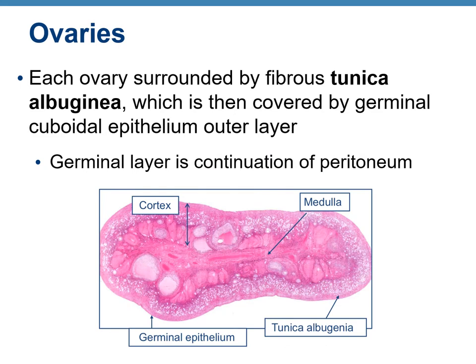Each ovary is surrounded by a fibrous tunica albuginea, which is covered by a germinal cuboidal epithelium as the outer layer. This germinal cuboidal epithelium continues with the peritoneum. On the histological slide, the most superficial layer is the germinal cuboidal epithelium, and deep to it is the tunica albuginea — similar to the tunica albuginea covering the testes.